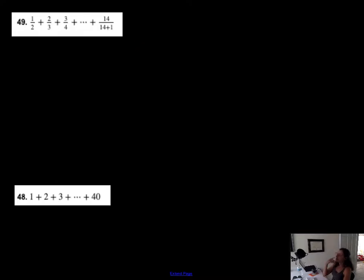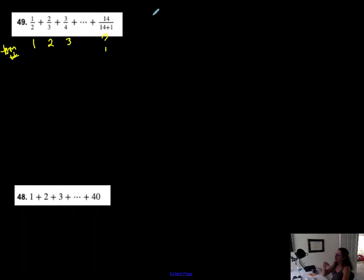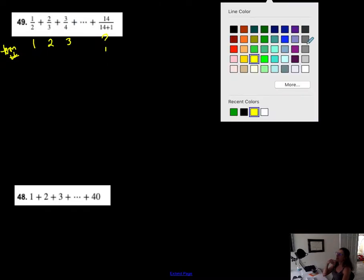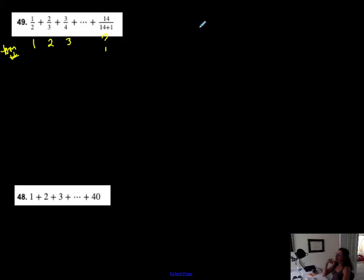What helps me is putting the term number next to the actual term value. So this is the first term, this is the second term, this is the third term, and I don't know what term the last one is — we'll figure that out after determining the formula. I look for a relationship between the term number and the term. What I notice is that the numerator matches the term number across all terms.